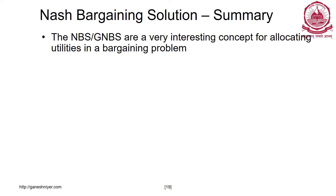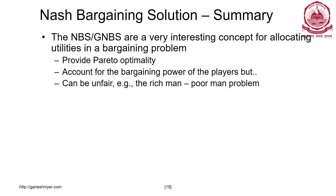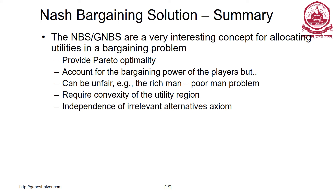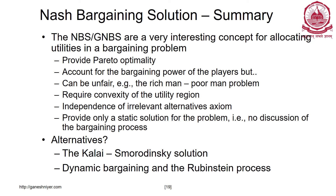In summary, the general Nash bargaining solution is a very interesting concept for allocating utilities. It provides Pareto optimality and accounts for the bargaining power of the players, but it can also be unfair. It requires convexity of the utility region and does not describe the process of how you get an answer — it gives only a static solution. Alternatives such as the Kalai–Smorodinsky solution can even consider the maximum requirements for each player, and interestingly, a special case of the Kalai–Smorodinsky solution is in fact the Nash bargaining solution.